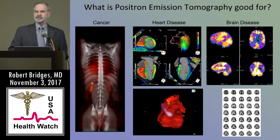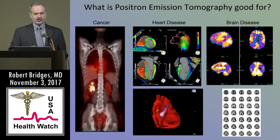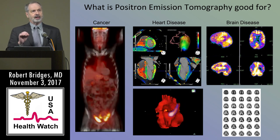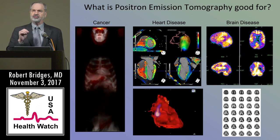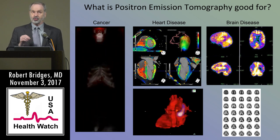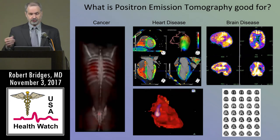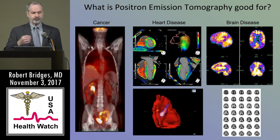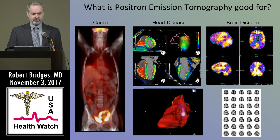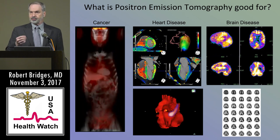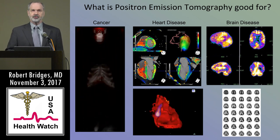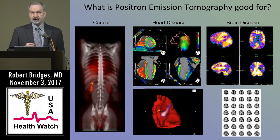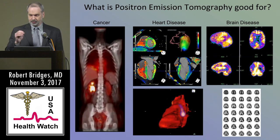What's good about positron emission? For cancer diagnosis, cancers use three to five times more glucose than regular tissue. For heart disease, we can look at perfusion and function of the heart. And for brain disease — as in the case of Alzheimer's — we can map out the metabolic pattern of the brain to see if there's an abnormality.